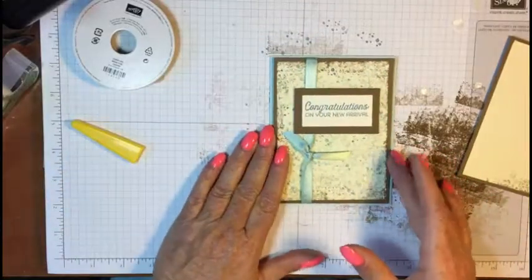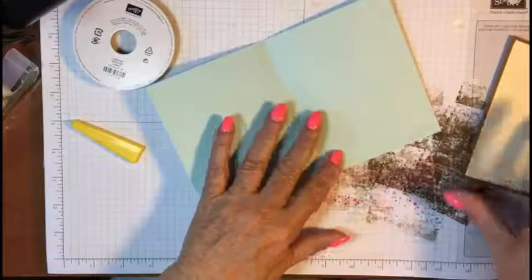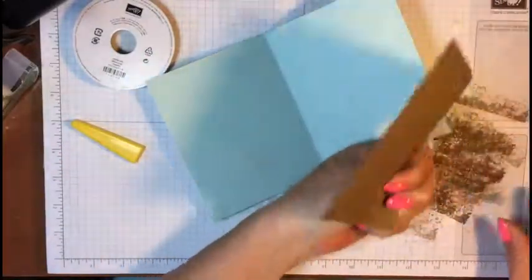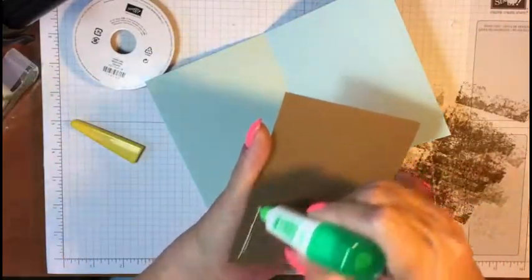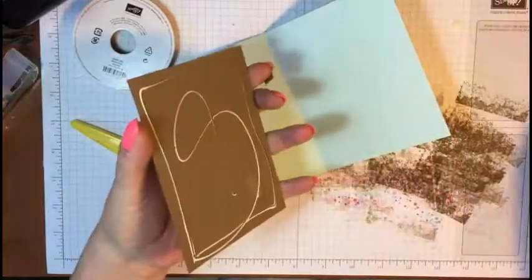All right, I may have to distress that a little bit with something—it's a little bit too white. Got glue on the back of that. Let's put this in here. There we go.